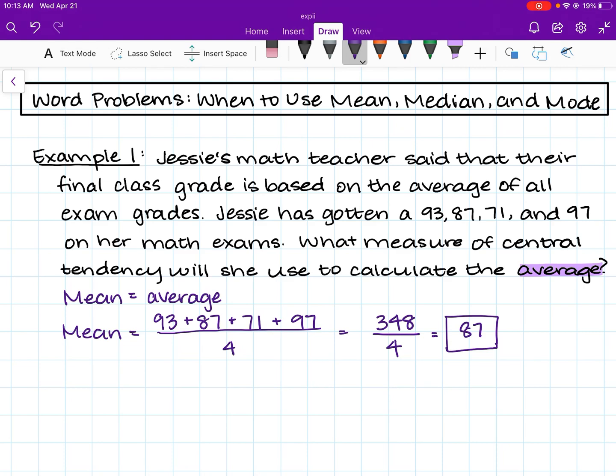Generally, mean problems are going to be pretty straightforward. If the question asks for an average, mean is the way to go. You can also see that there's no outlier in this data set, and so it's not too spread out. And so mean is an accurate way of describing this data.